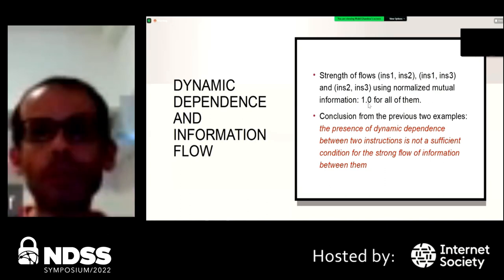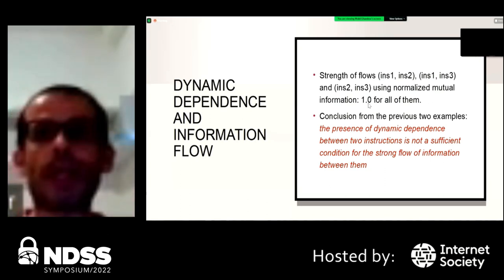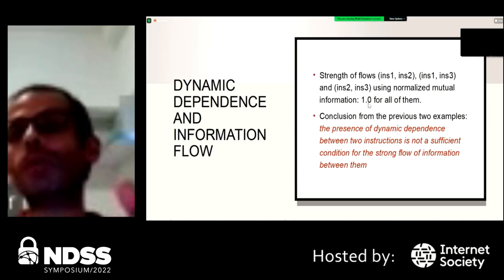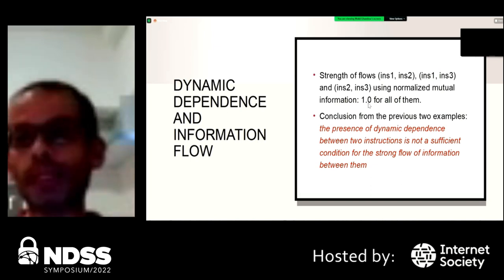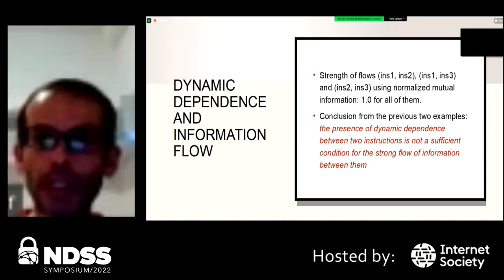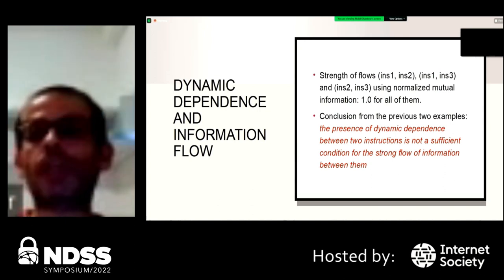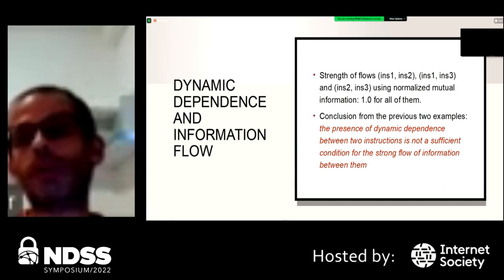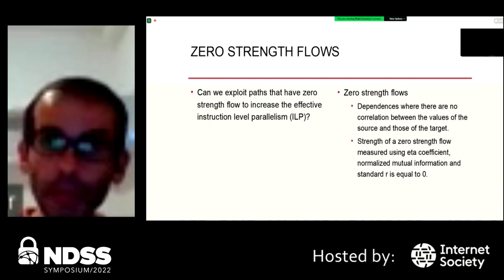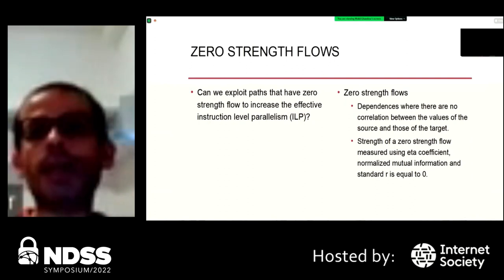If I replace the modulus with multiplication and redo the same analysis, the strength of flow between all of these instructions becomes 1. We can conclude that the presence of dynamic dependency between two instructions is not a sufficient condition for strong flow of information between them.